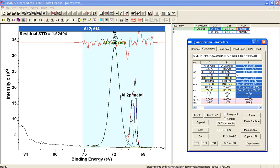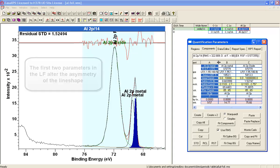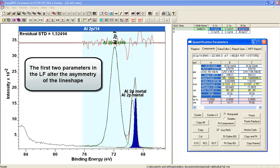But we've still got some structure here that we would like to accommodate by the metal, so now we need to introduce an asymmetric component to this peak.